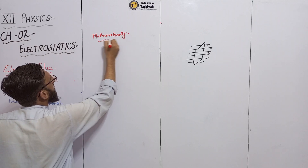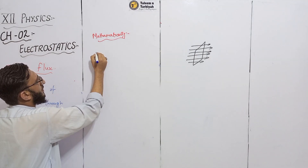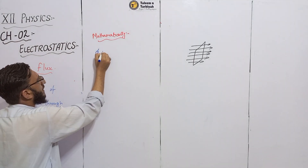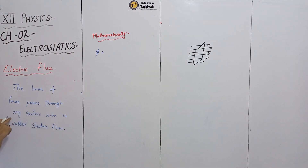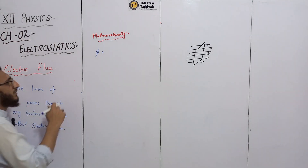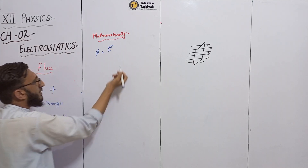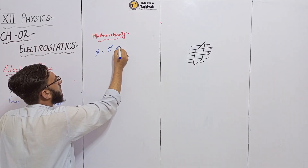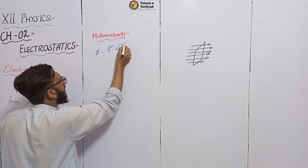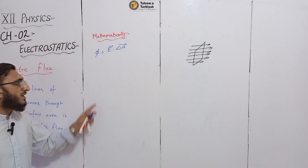Electric flux — which we denote as phi — is defined as the line of forces passing through any surface area. It involves electrical intensity dot the change in area, where this area is our line of force area.